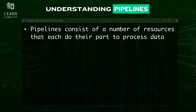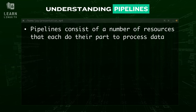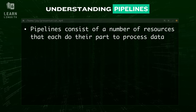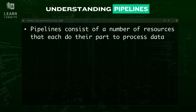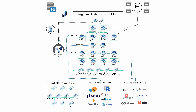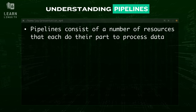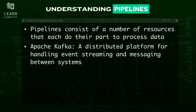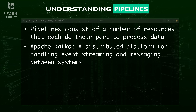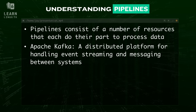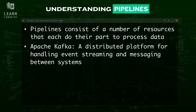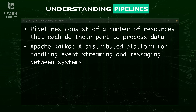A big data pipeline consists of any number of servers, applications, and services that are designed to communicate with one another and spread the workload, with Linux as the platform of choice to run on. Among the key solutions, first is Apache Kafka — a distributed platform for handling high-volume event streaming and messaging between systems. It allows different services in a big data pipeline to publish and subscribe to data streams in real time, making it a backbone for moving large amounts of data quickly and reliably.